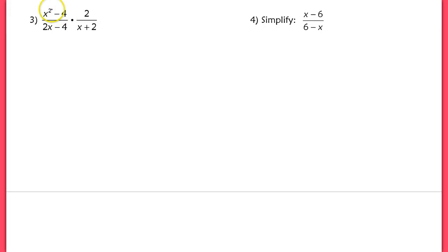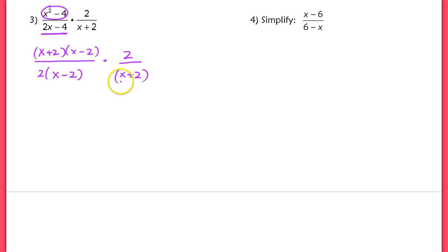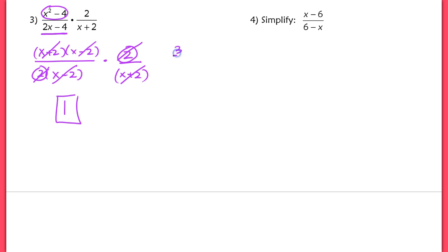In question 3 we have a difference of squares, which factors as x plus 2 times x minus 2. In the denominator, factor out a GCF of 2, giving 2 times x minus 2. Then the second fraction has 2 in the numerator and x plus 2 in the denominator. The x plus 2s cancel, the x minus 2s cancel, and the 2s cancel. This product is not 0 — it equals 1. It's like 3 over 3, which is 1, not 0.